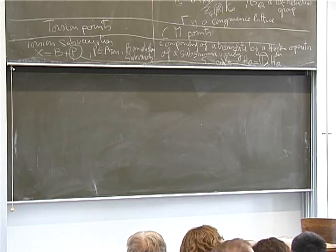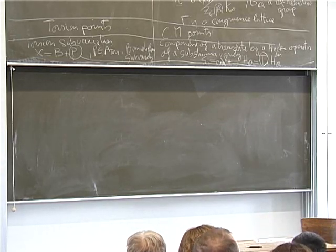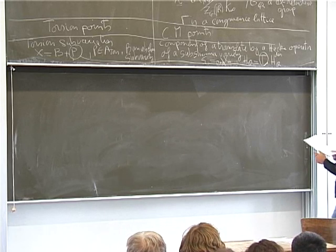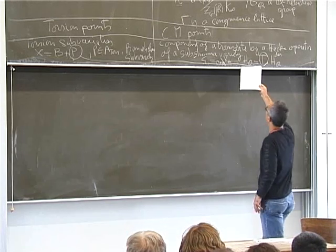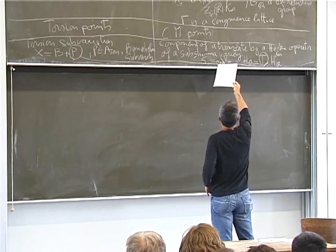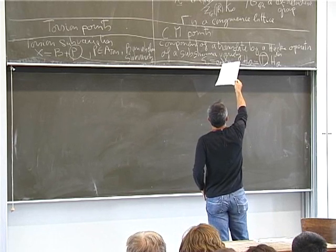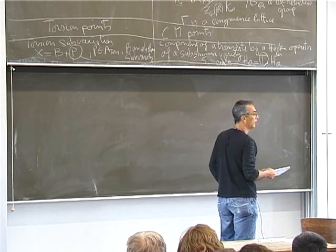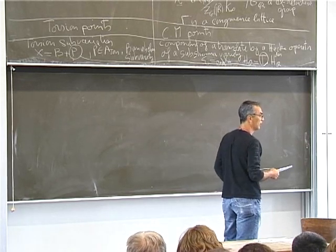To clarify the notation: SH is X_H divided by gamma intersected with H of R.